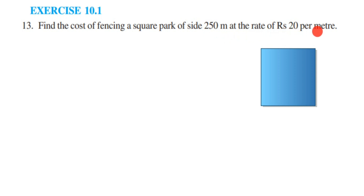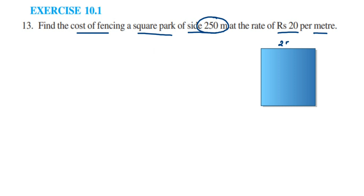What is given? They have given a square park of side 250 meters, and we have to find out the cost of fencing, where per meter they are charging 20 rupees. Since it's a square, all sides will be the same — all sides will be 250 meters.